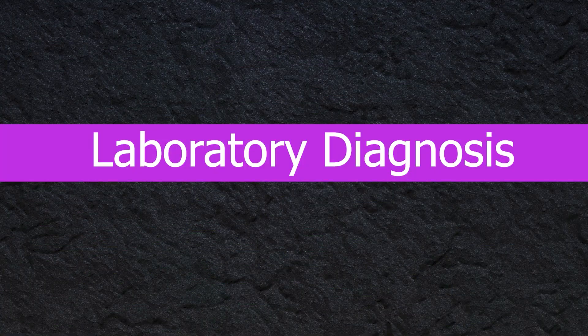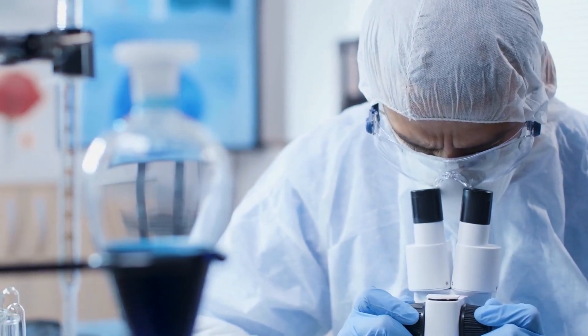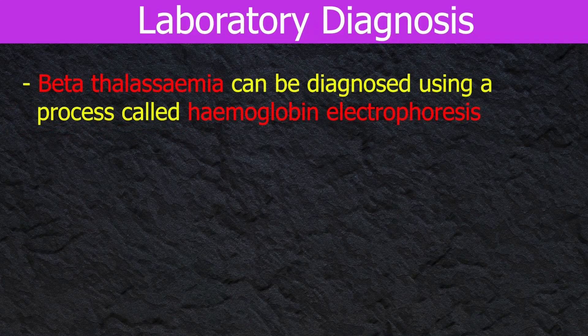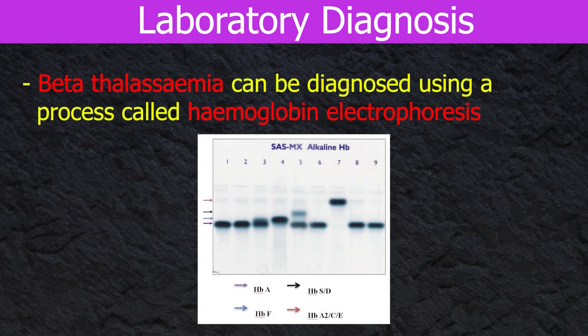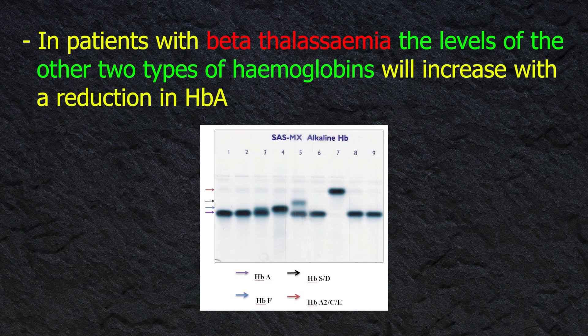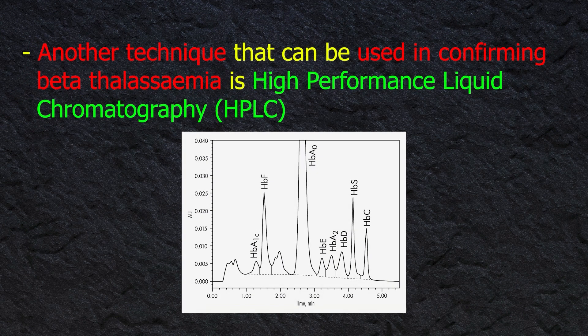The diagnostic tests for alpha and beta thalassemia are somewhat different. Beta thalassemia can be diagnosed using hemoglobin electrophoresis, which measures the different types of hemoglobin in the blood. Normally there is a hemoglobin A predominance followed by small amounts of hemoglobin A2 and hemoglobin F. In beta thalassemia patients, levels of hemoglobin A2 and F increase with a reduction in hemoglobin A. Another technique used to confirm beta thalassemia is high-performance liquid chromatography, or HPLC.